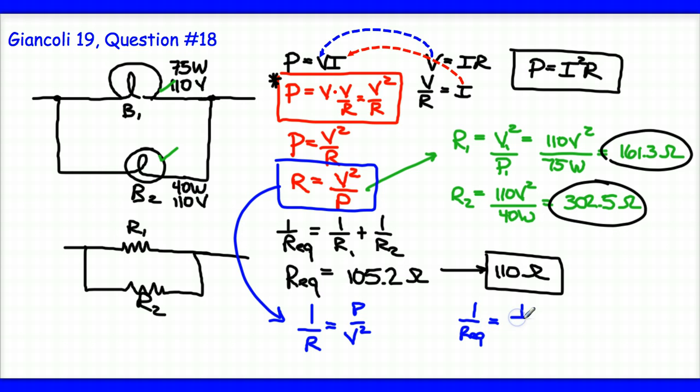Therefore, when I end up writing one over Req equals one over R1 plus one over R2, I can basically just say, well, one over R1 is equal to the power of bulb number one over V squared, and add to that power bulb two over V squared for bulb number two. That would just be another way of doing it - it's still going to bring me to the same place, 110 ohms being the resistance of both bulbs together.